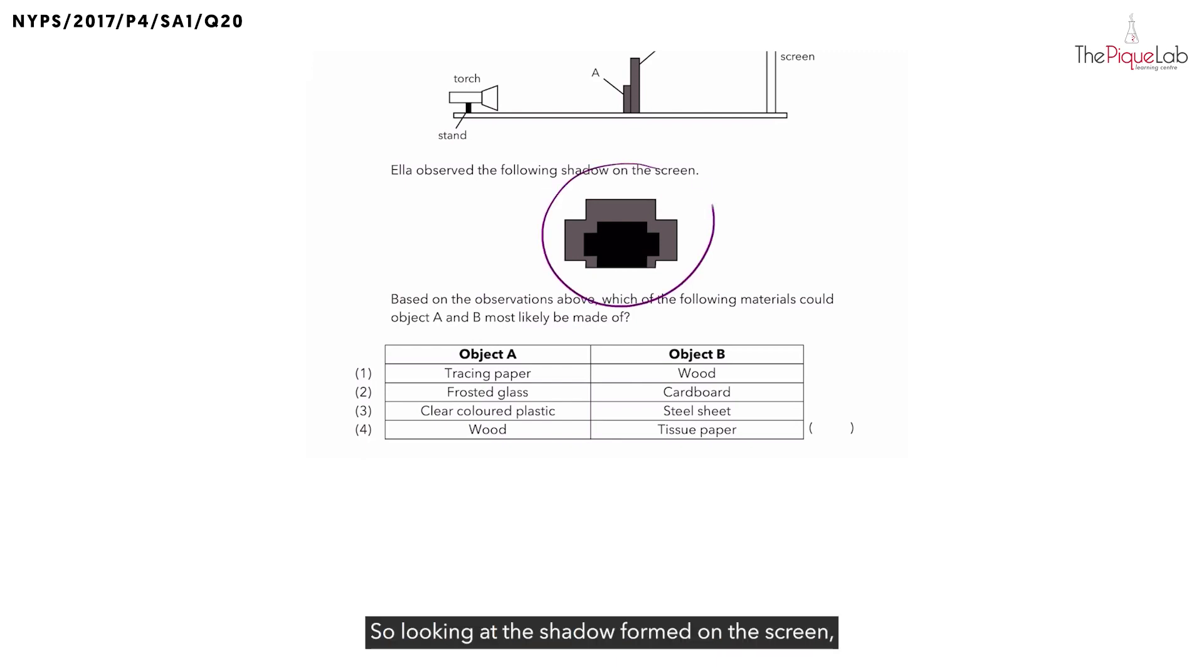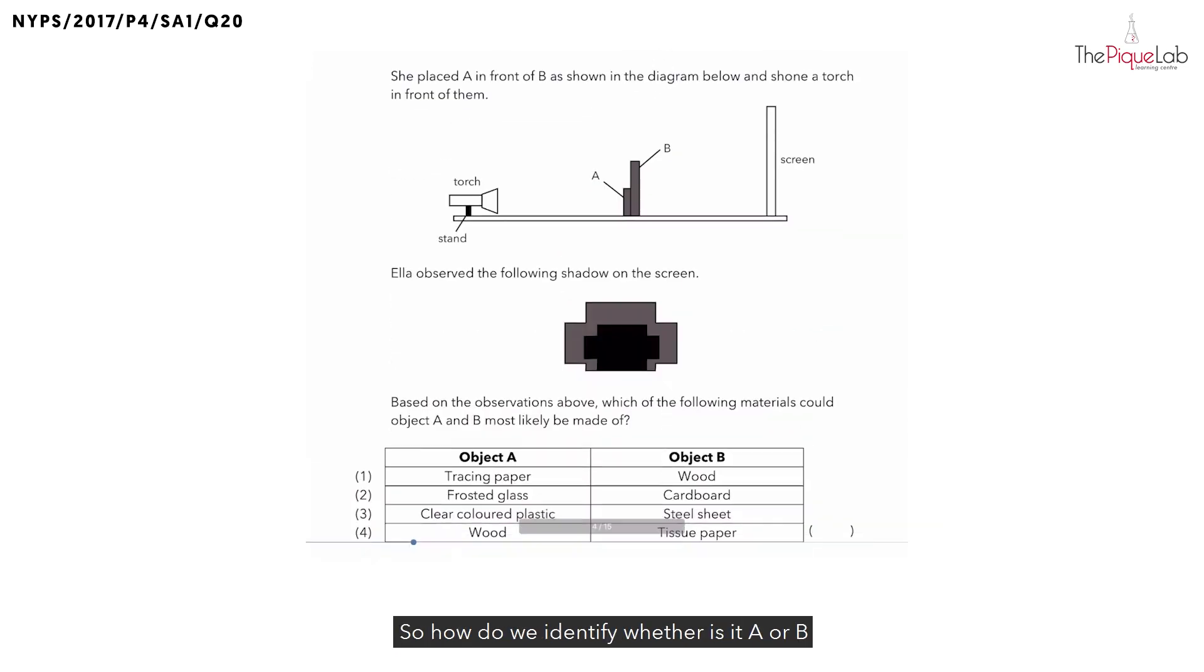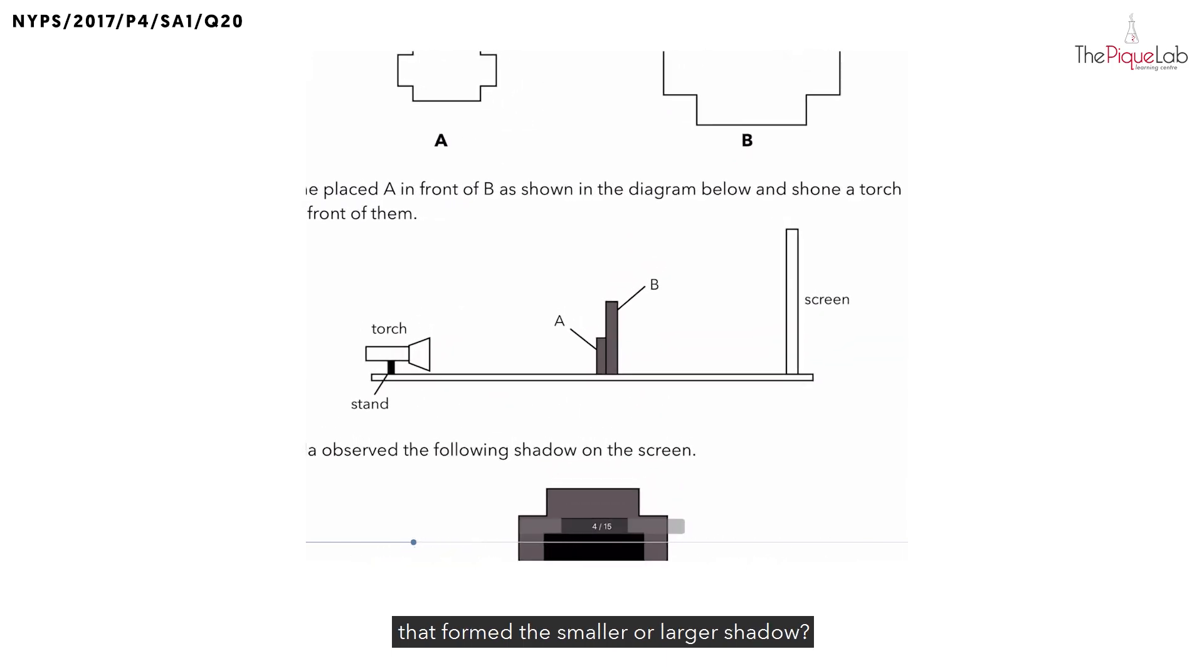Looking at the shadow formed on the screen, we notice that there is a smaller shadow formed and a larger shadow formed. We need to identify which object A or B forms the smaller shadow and which object forms the larger shadow. How do we identify whether it's A or B that forms the smaller or larger shadow? We can use the setup to help us. What I would do is take out a pen or pencil and a ruler and draw how light travels in order for shadows to be formed.